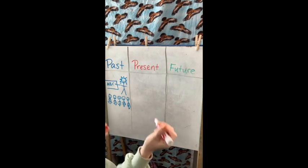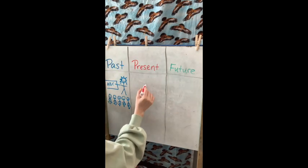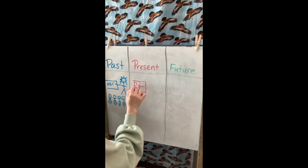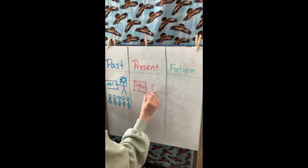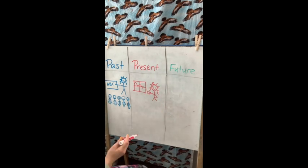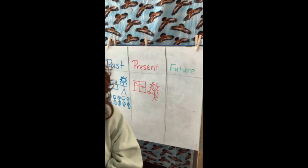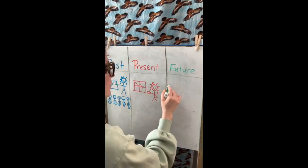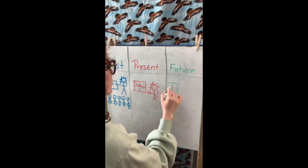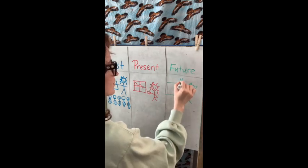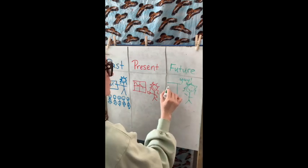Now for present, I'm going to draw me looking out my window. I'll hold a coffee cup in my hand. And then in the future, I can draw—I'm going to draw me back at school again. And I'm saying 'yay' because I just got back to school.